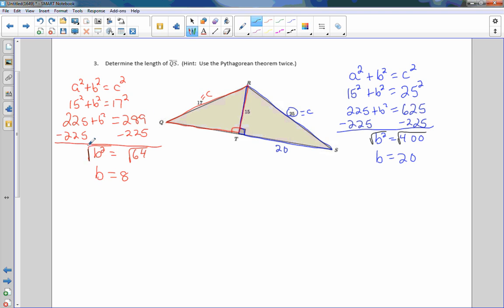So I have B equal to 8. So now I would say segment QT plus segment TS equals segment QS. Determine the length of segment QS. QT is 8 plus TS is 20 equals QS. 8 plus 20 is 28 equals QS.